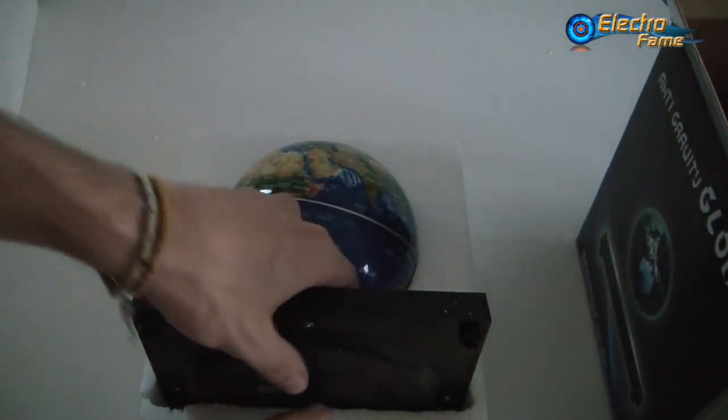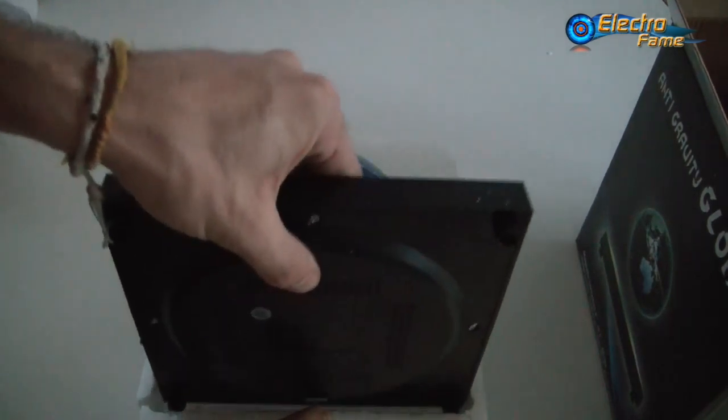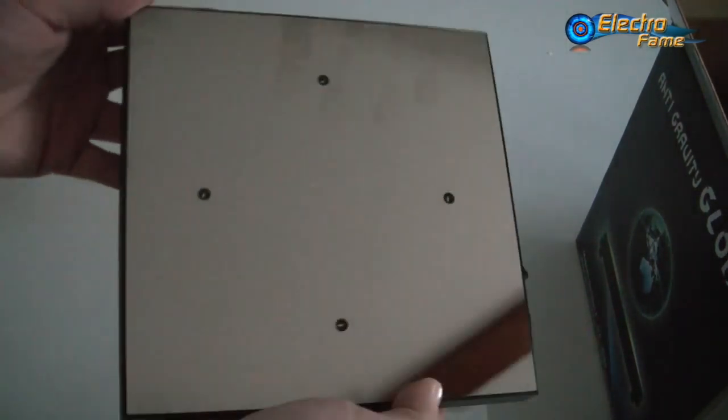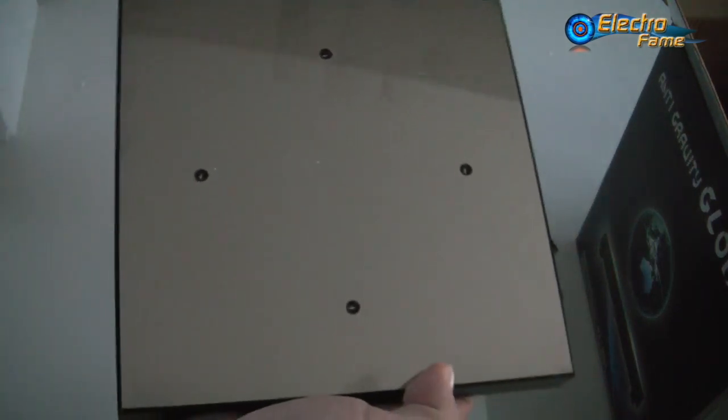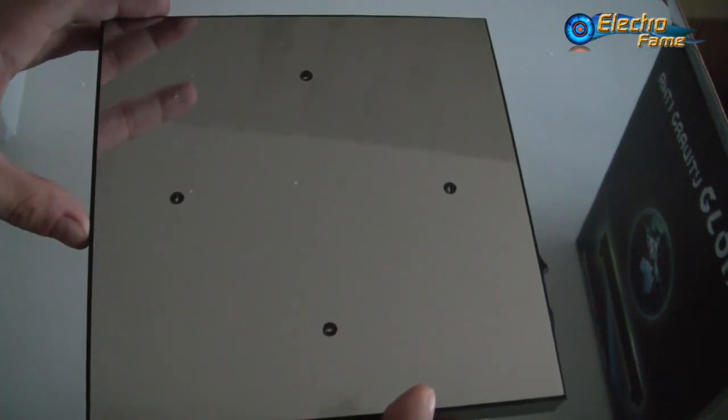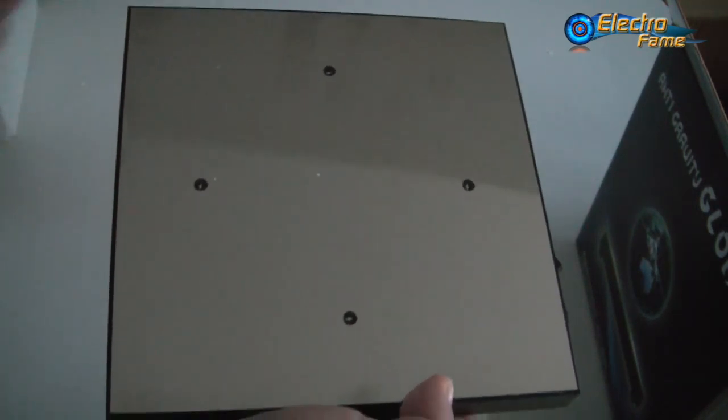We have here the base. This one is a squarish base, but we also have a round base and also two different kind of fake books basically.